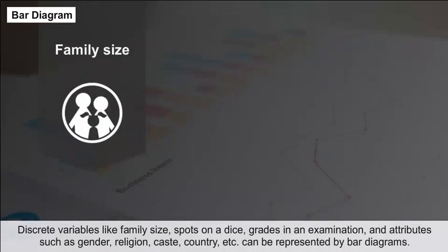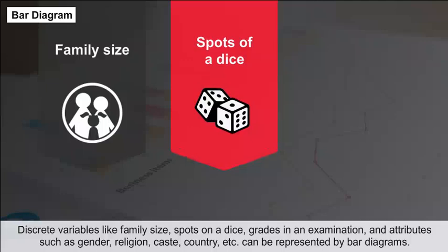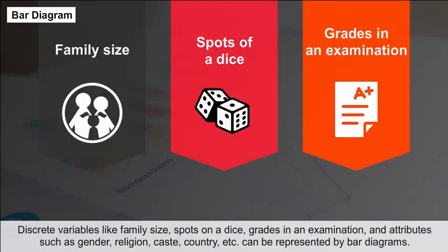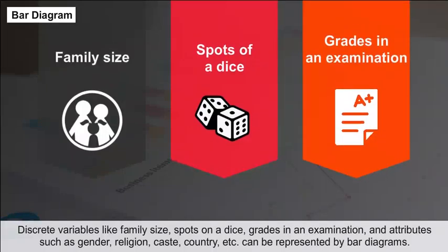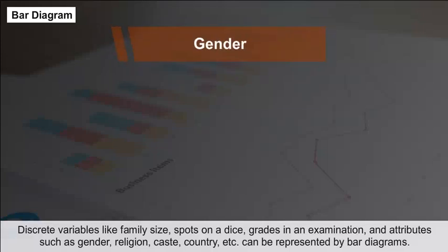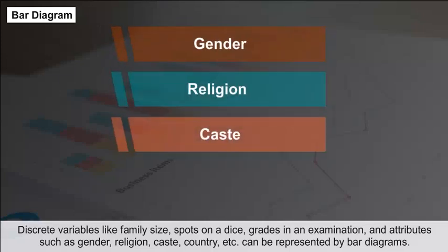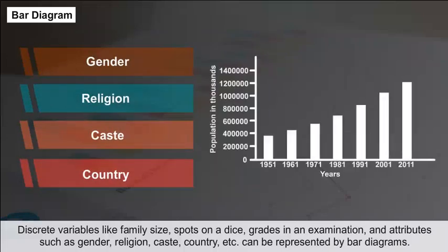Discrete variables like family size, spots on a die, grades in an examination, and attributes such as gender, religion, caste, and country are represented by bar diagrams.